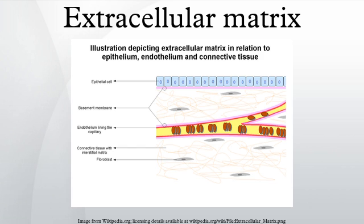An understanding of ECM structure and composition also helps in comprehending the complex dynamics of tumor invasion and metastasis in cancer biology, as metastasis often involves the destruction of extracellular matrix by enzymes such as serine proteases, threonine proteases, and matrix metalloproteinases.